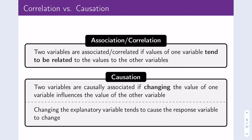This leads into the discussion between correlation and causation. A correlation, also called an association, occurs when two variables are associated if the values of one variable tend to be related to the values of the other — as with Maine's divorce rate and margarine consumption both going down together. Causation differs in that two variables are causally associated if changing the value of one variable actually influences the value of the other — that is, changing the explanatory variable causes the response variable to change.